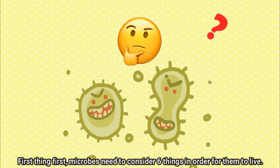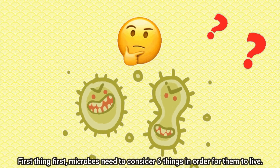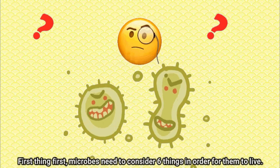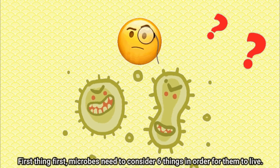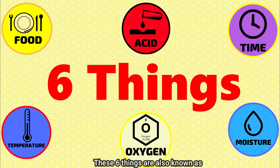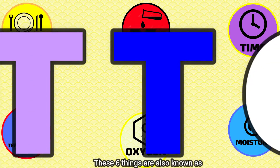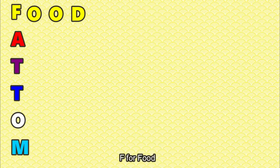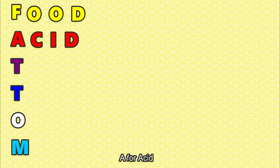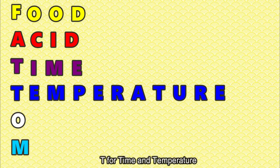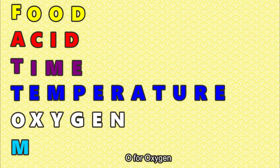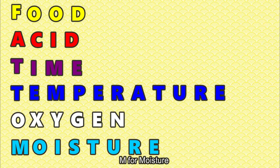First thing first, microbes need to consider six things in order for them to live. These six things are also known as FATTOM: F for food, A for acid, T for time and temperature, O for oxygen, and M for moisture.